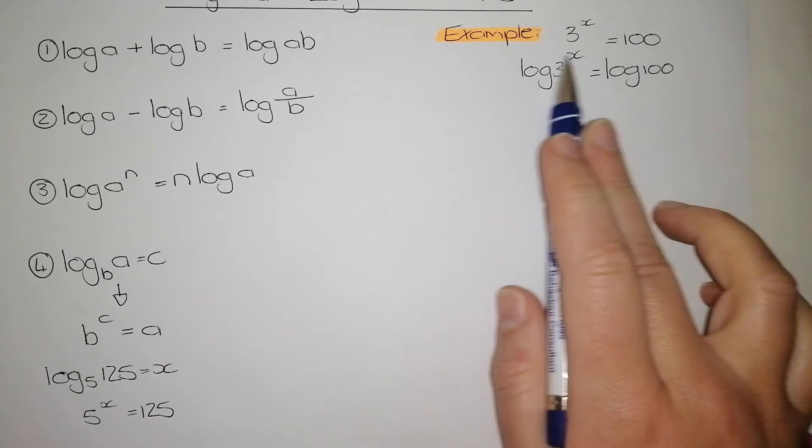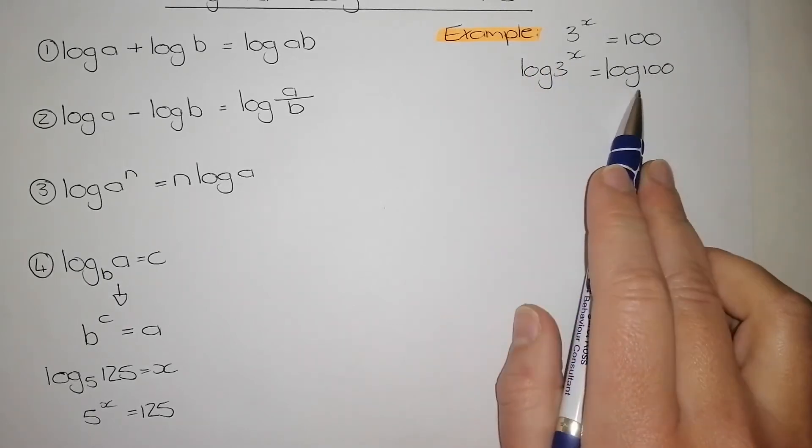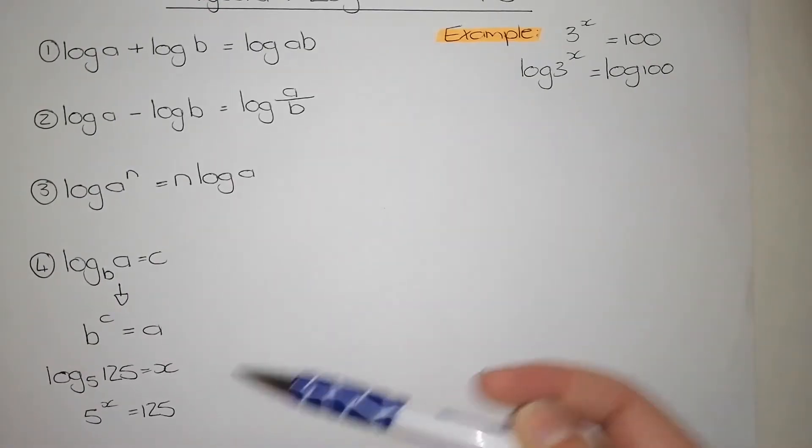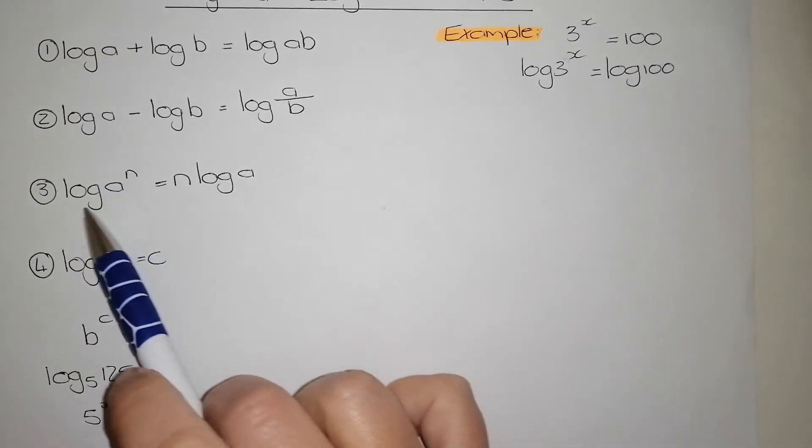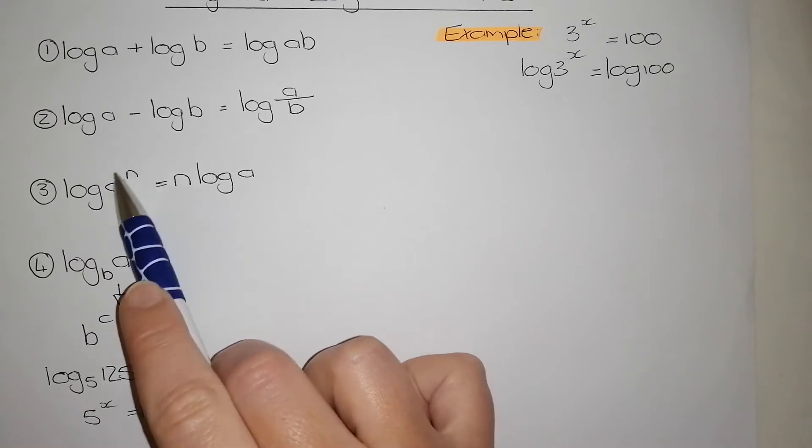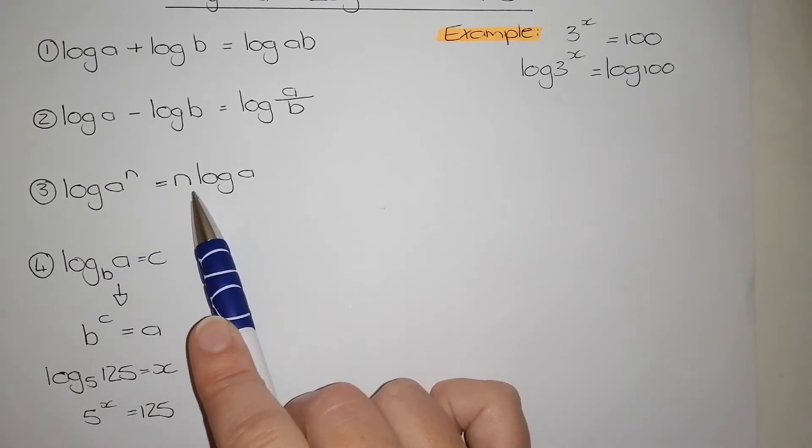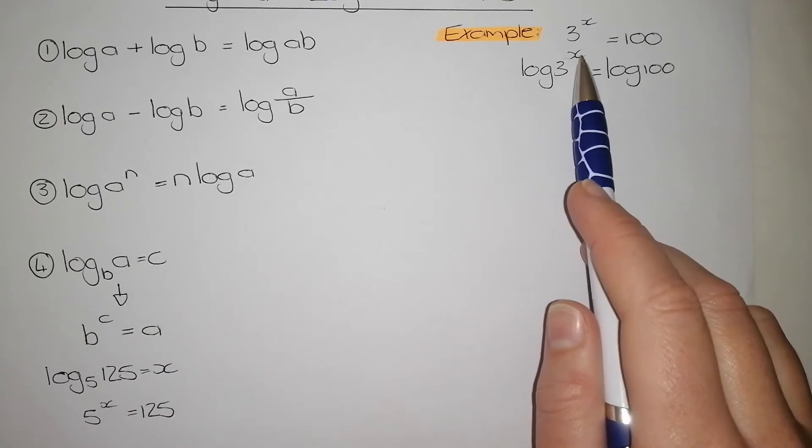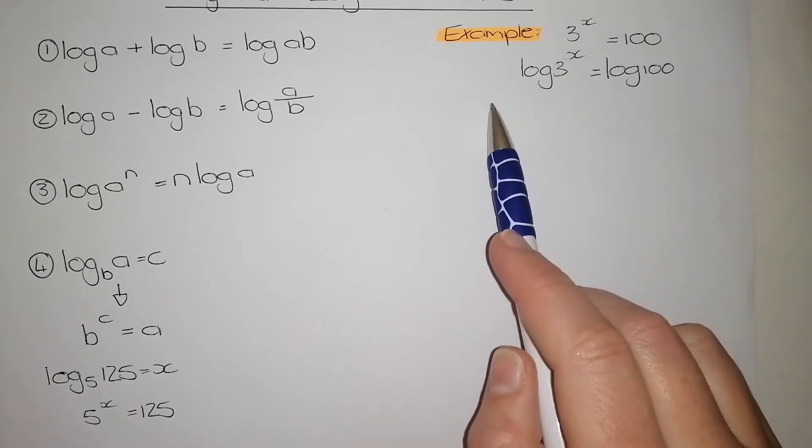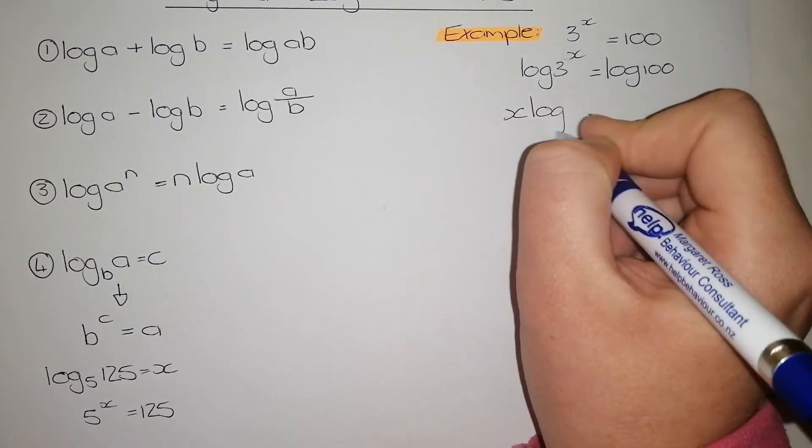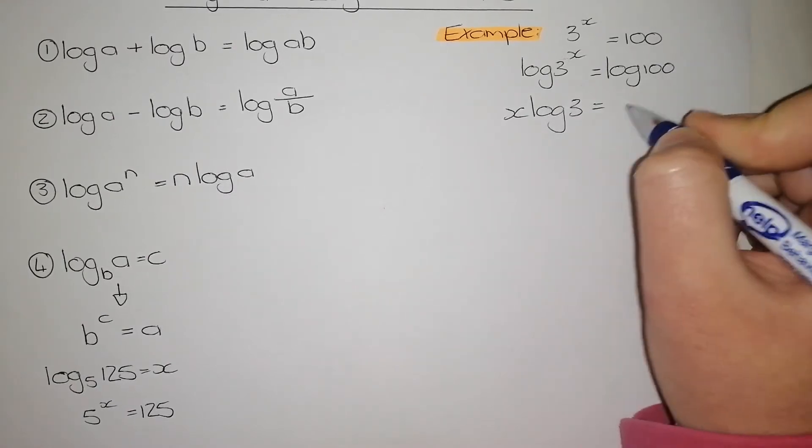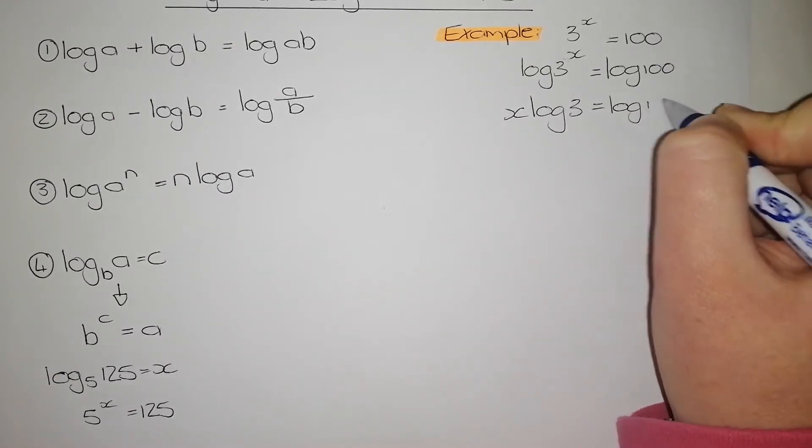Now that I have my new logarithm equation, now I need to apply one of these rules. As you can see, I've got a base number with a power, and the rule that we need to use is that the power becomes the number in front of my log. So, therefore, I can put x in front of my log. So, I have x log 3 is equal to log of 100.